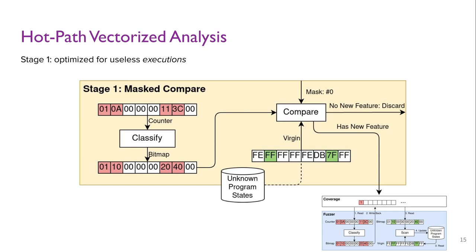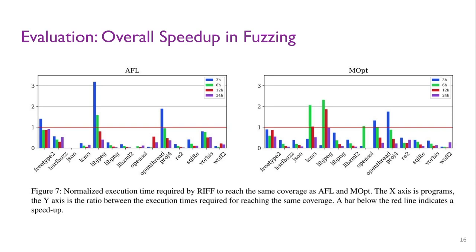We enhance AFL and AFLMOpt with RIF to evaluate our work. Inside the figures, lower bars indicate faster time to achieve the same coverage as the baseline fuzzers, and the red bar denotes a timeout. On average, to reach the final coverage of AFL and AFLMOpt running for 24 hours, RIF's improved versions only require 6.23 and 6.82 hours respectively.